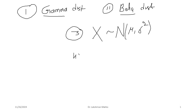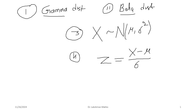We can transform a normal random variable X with mean mu and variance sigma squared by defining a linear function. We define a new random variable Z from X: we deviate X by the mean of X, which is mu, and normalize it by the standard deviation — the square root of the variance. The mean of Z is easily computed as zero.